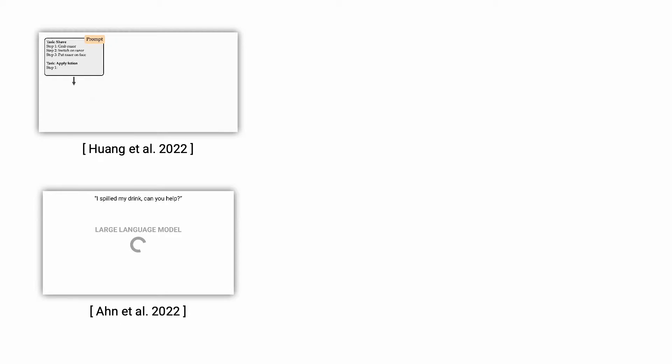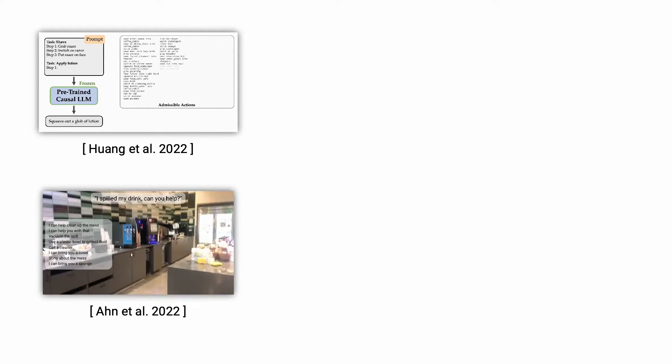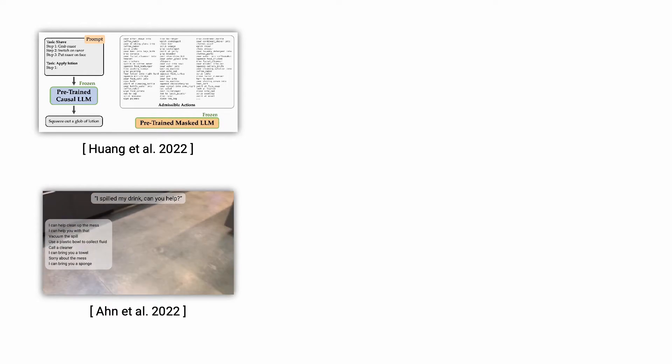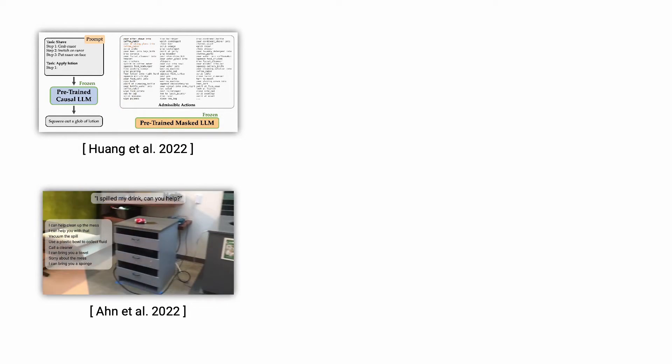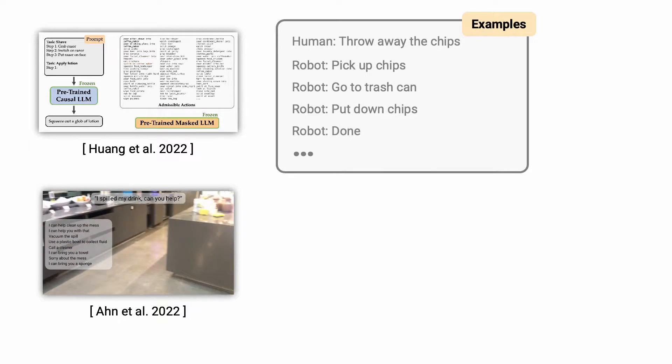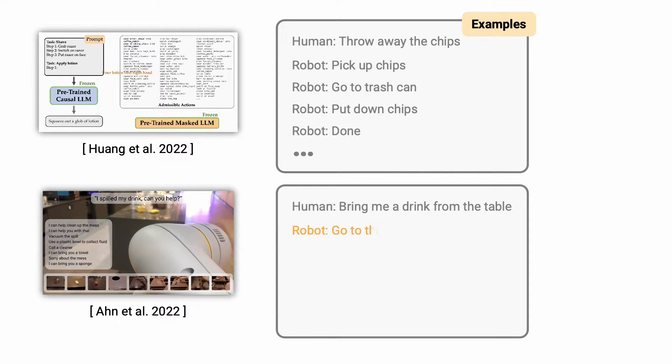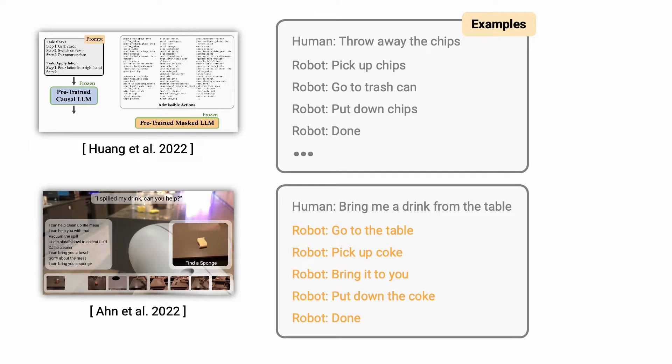Recently, it has been observed that large language models can generate coherent action plans for complex long-horizon tasks, even without any additional training. Specifically, when they are prompted with examples, they can be made to produce sensible action plans for new tasks, such as bringing a drink from the table.